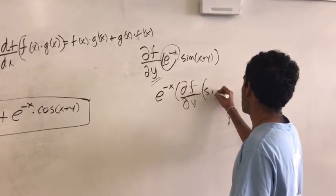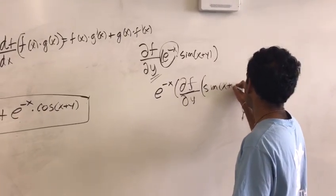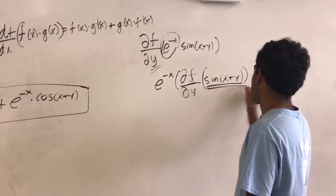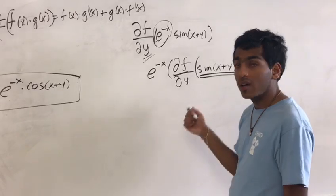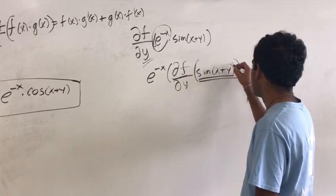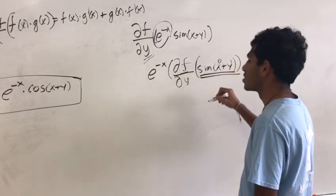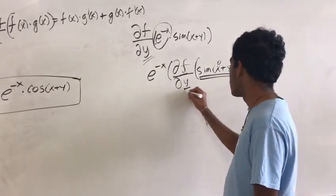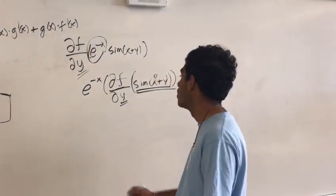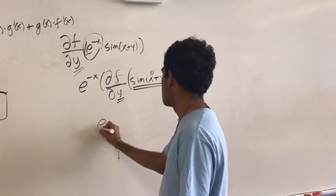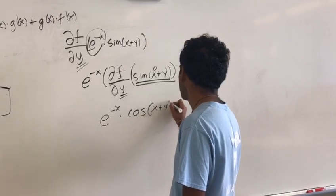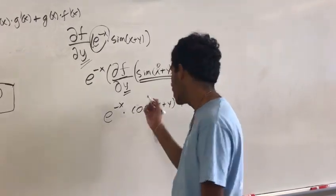So that is going to be the sine of x plus y. The derivative of sine, as I mentioned earlier, is just the cosine of the same function. The chain rule is covered here as well because the coefficient is just 1, and x is a constant when differentiating with respect to y, so the derivative of that constant is 0. So this is just going to be e raised to the negative x times the cosine of x plus y times 1 — just tag that along, but it's not going to make a difference.